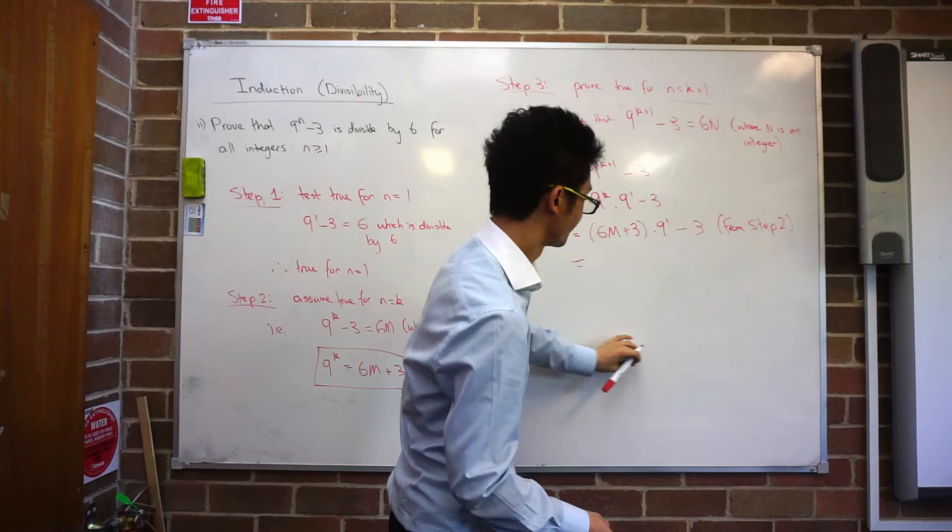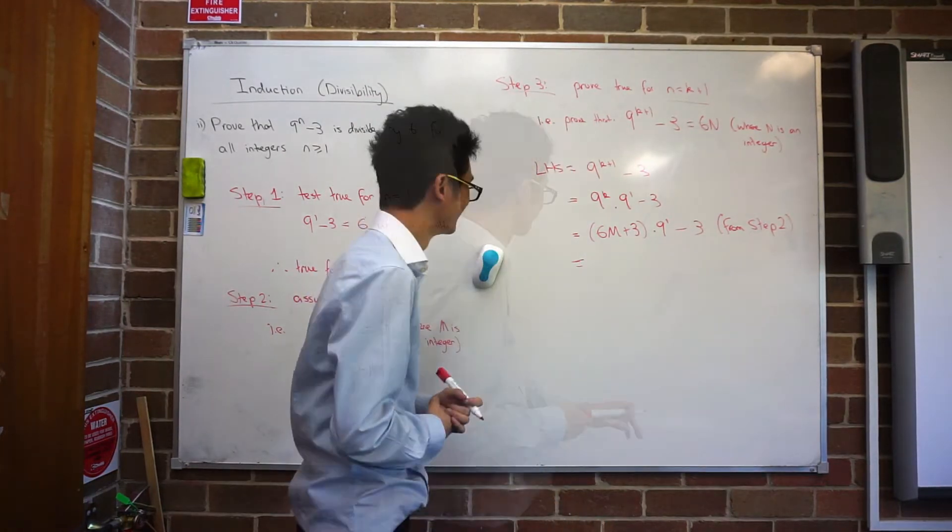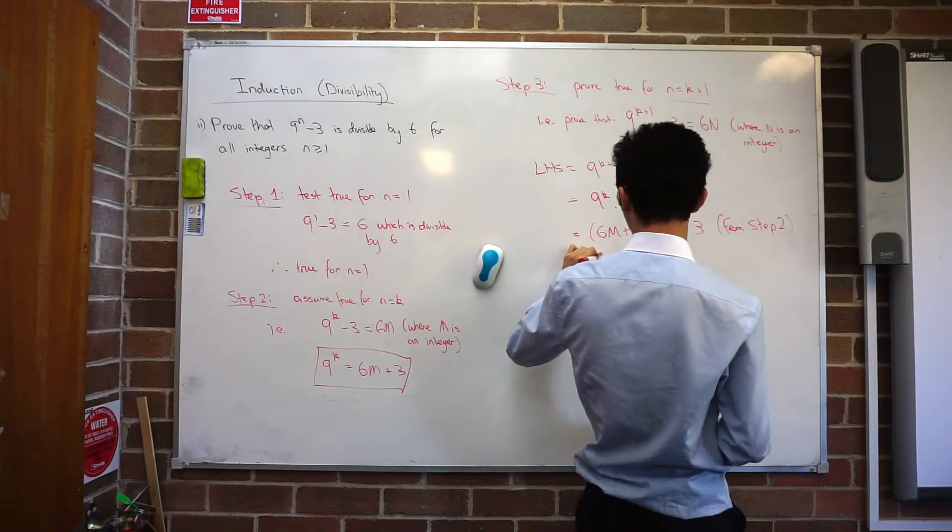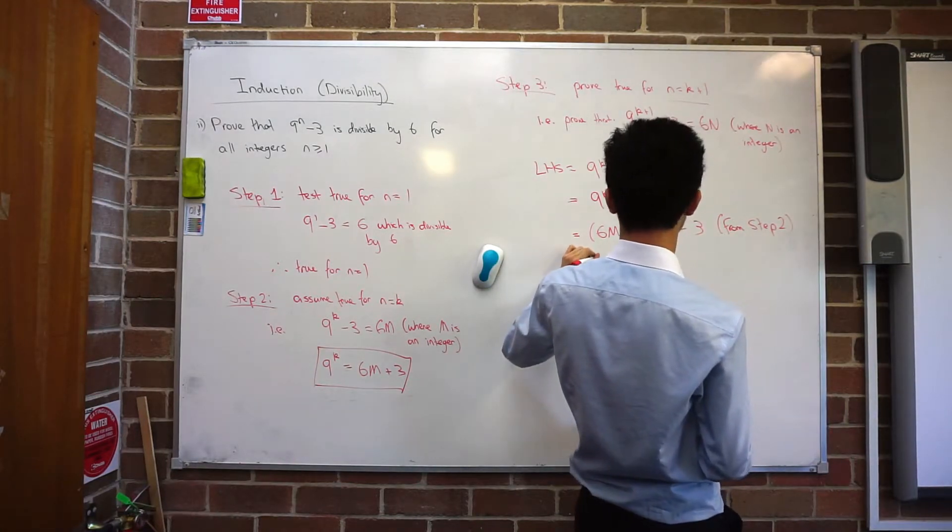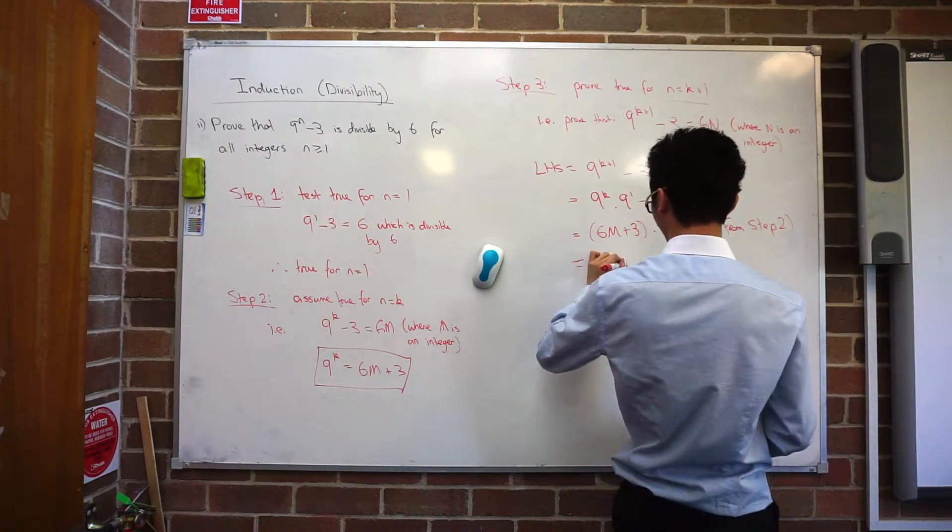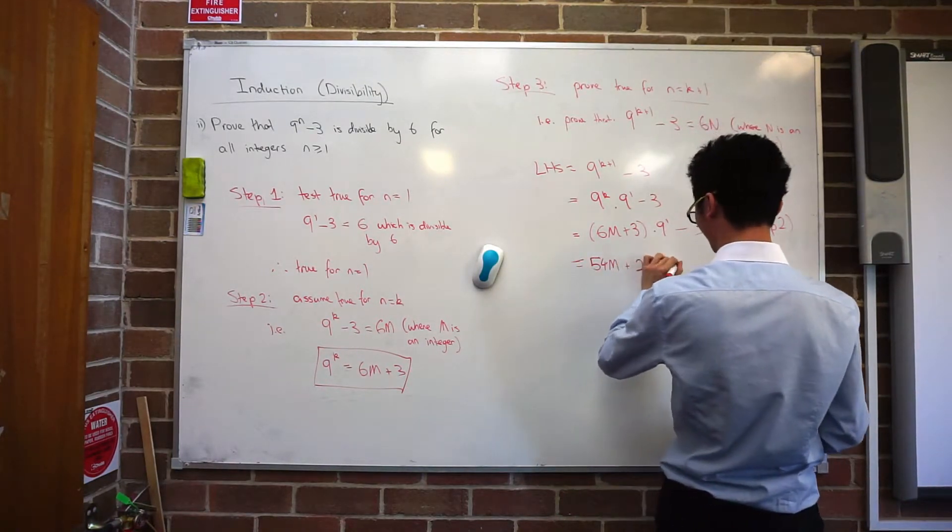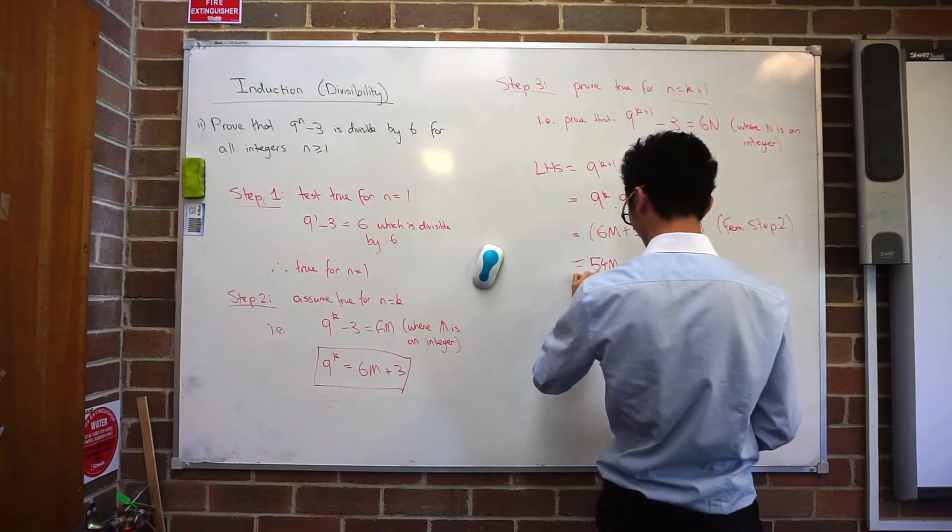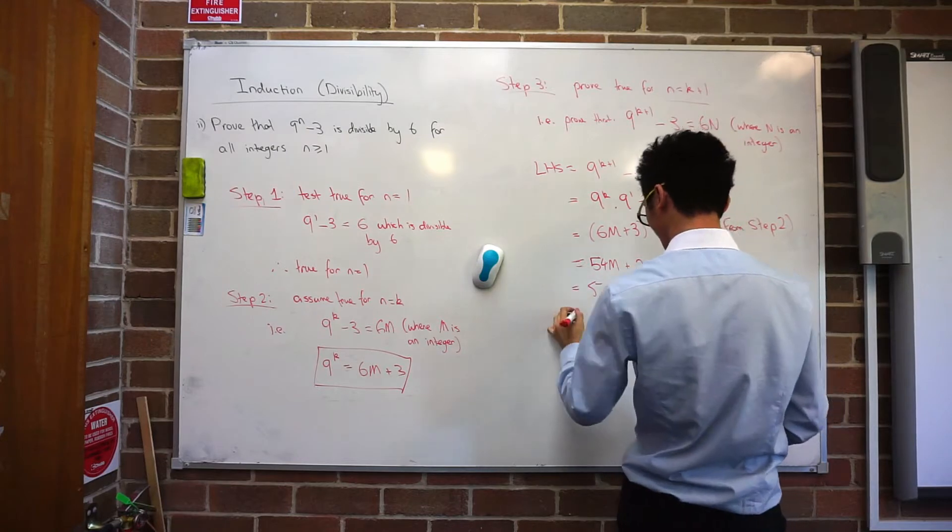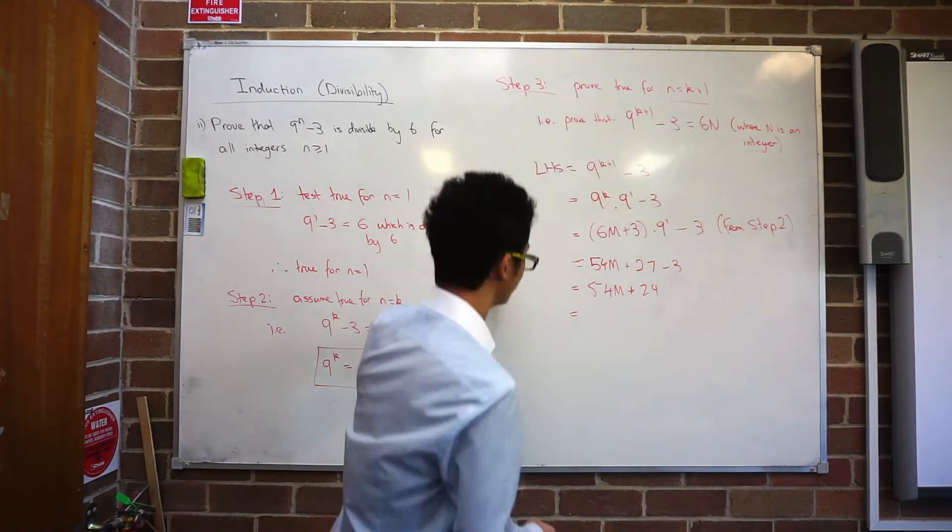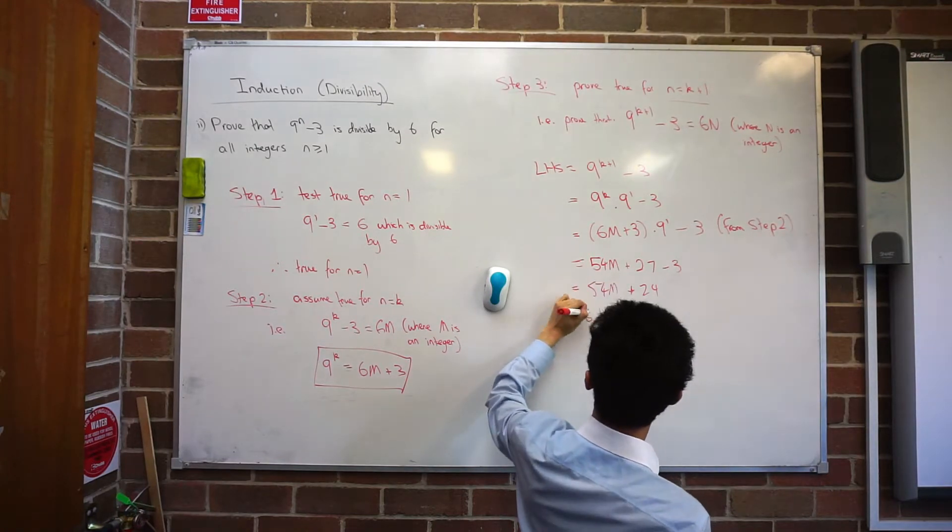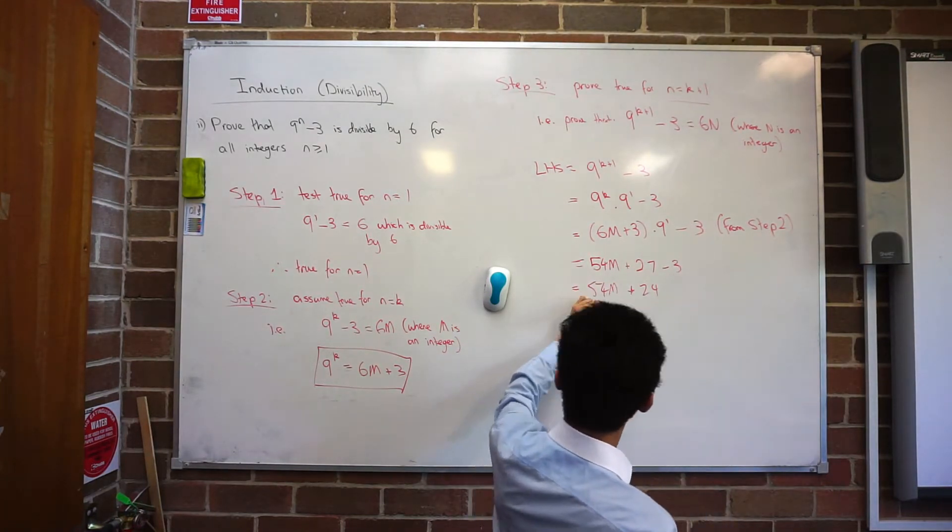What do I want to do next? Multiply it so it becomes 56m plus 27. 54, sorry. 54m plus 27 minus 3 is 54m plus 24 and you can factorize that to have 6 out the front. 6 times 9m plus 4.